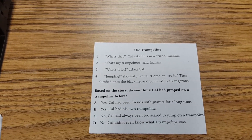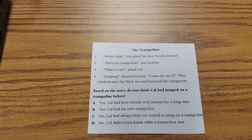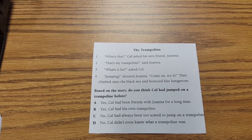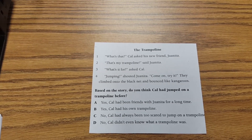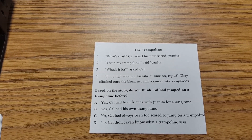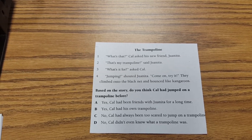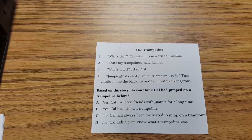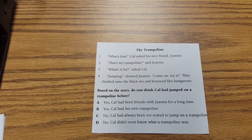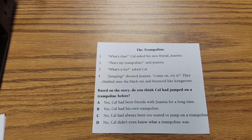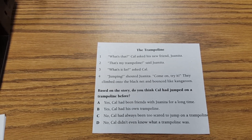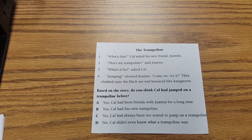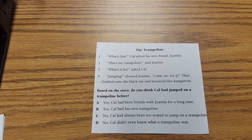So here we have 'The Trampoline.' 'What's that?' Cal asked his new friend Juanita. 'That's my trampoline,' said Juanita. 'What's it for?' asked Cal. 'Jumping!' shouted Juanita. 'Come on, try it!' They climbed onto the black net and bounced like kangaroos.